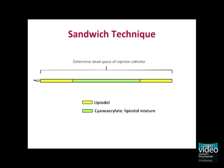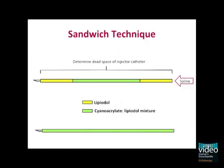Another technique is the pre-filling of the injector sheath with a cyanoacrylate and lipiodol mixture. This can be useful for repeated injections or in the case of active bleeding, and the catheter can be flushed between injections with saline.